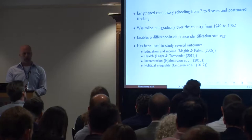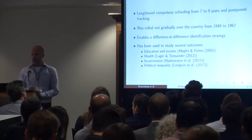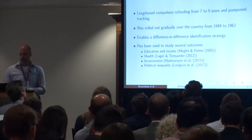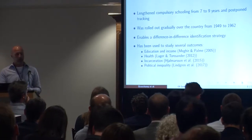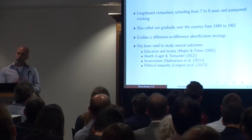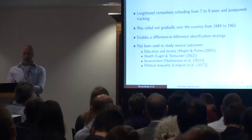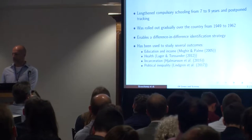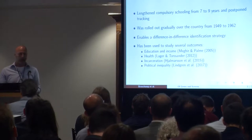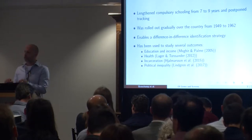In the post-reform system, all students were kept in the same classes and schools until they completed ninth grade, the new minimum level of schooling. Another very useful property of this reform is how it was implemented. The reform was rolled out gradually across the country between 1949 and 1962 as part of a larger evaluation program. In municipalities participating in this program, pupils in grades one through five were assigned to the new school system, whereas those in grades six and seven stayed in the old system.